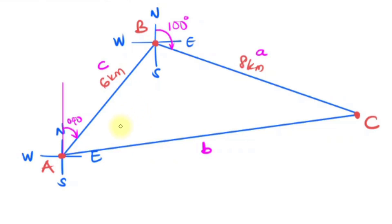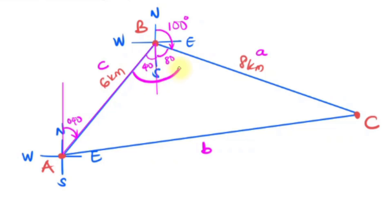Looking at the triangle, we don't know any of the included angles yet, so we need to find at least one. At point B, by the rules of parallel lines, the alternate angle to the 40-degree bearing gives us 40 degrees on the other side. From north to south is 180 degrees; already the bearing from B to C uses 100 degrees, leaving 80 degrees. So the angle at B is 40 plus 80, which is 120 degrees.